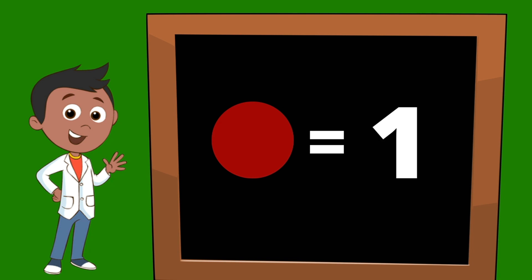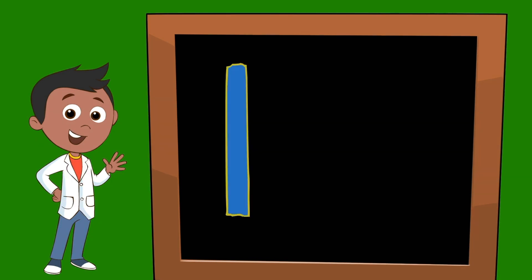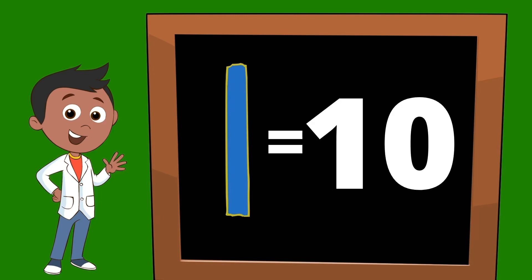One dot is equal to one. This is a ten stick. Ten sticks represent ten. So one ten stick is equal to the number ten.